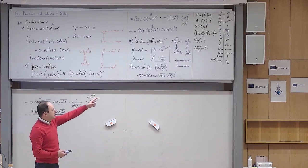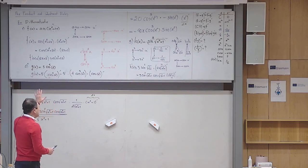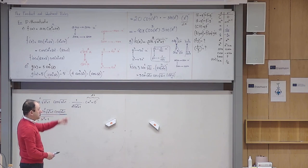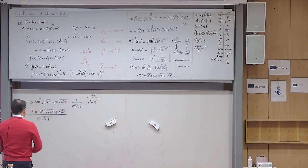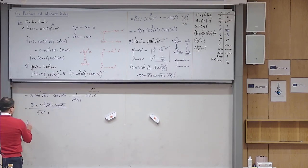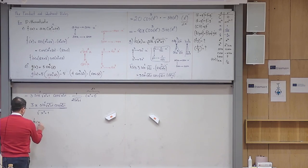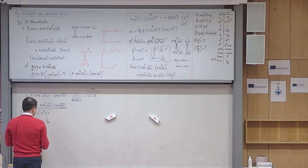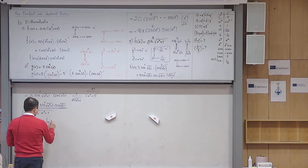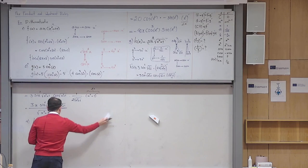Let me also give one example from the logarithm function, then add this review example and go answer those three question marks. Number four: k(x) = ln(cos x).